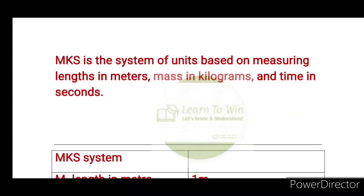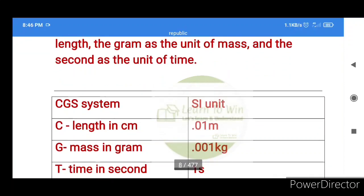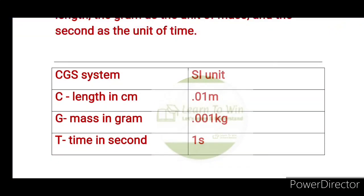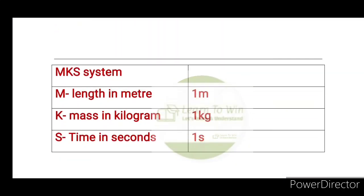The MKS unit is: length is meter, mass is kilogram, and time is second. CGS unit: C stands for centimeter, G stands for gram, and S for second. MKS unit: M is length in meter, K is mass in kilogram, S is time in second.